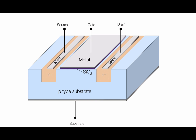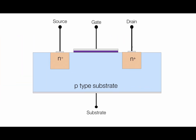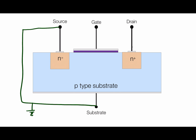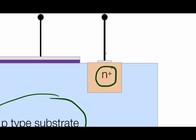So this is an n-channel enhancement type MOSFET, and you can see the terminals: source, gate, drain, and substrate. Here, source and substrate are connected together and grounded, meaning there is no potential difference between the source and the substrate terminal. This part is the n-type semiconductor, the substrate is the p-type semiconductor, and this other part is also n-type semiconductor.